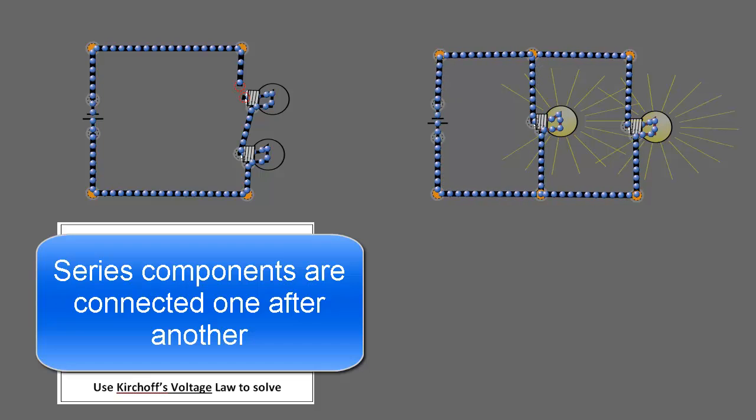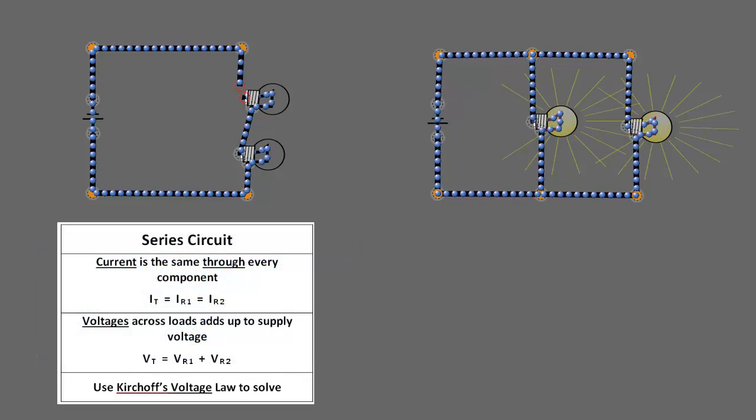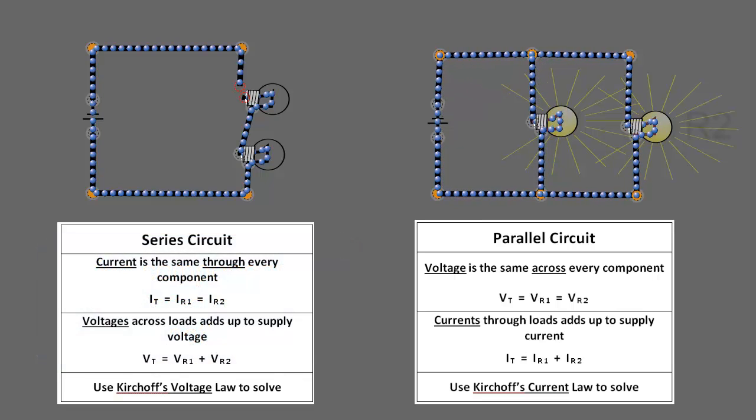So when we talk about the world series, for instance, we're talking about games that follow one another, one game follows another game versus two games being shown at the same time.